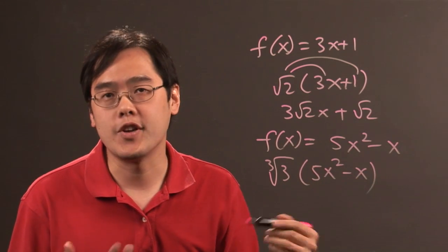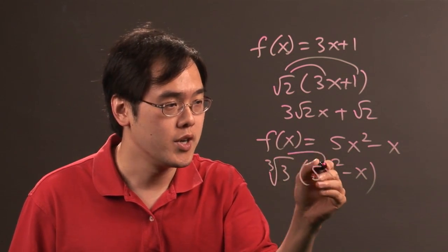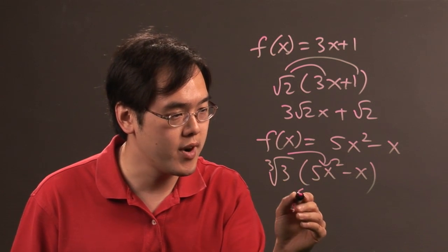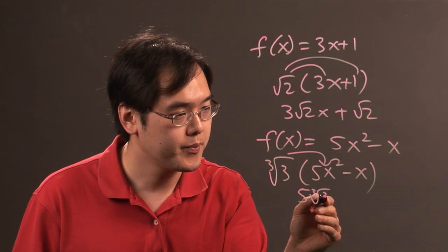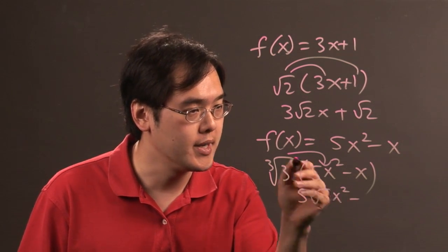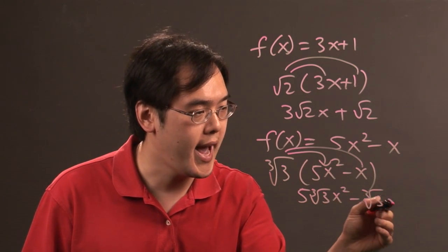again, you don't have much of an option but to attach them when you distribute. So cube root of 3 times 5x squared is 5 cube root of 3x squared minus cube root of 3x.